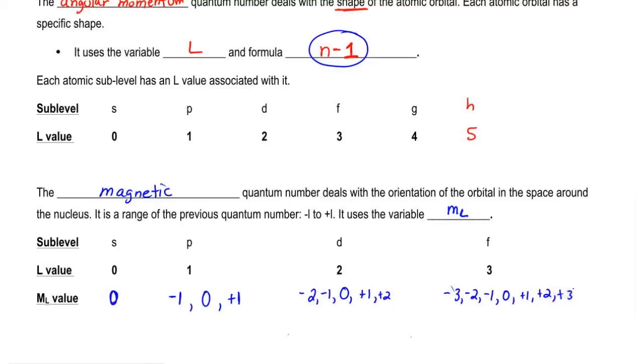Now, how many electron orbitals does the s have? It has one. How many electron orbitals does p have? It has three. How many electron orbitals does the d have? It has five. And how many electron orbitals does the f have? F has seven.